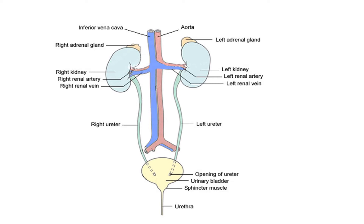Now let's see how these parts of the excretory system are arranged in our body. The kidneys are situated on the back side of our abdomen, on either side of the backbone. This is the right kidney and this is the left kidney. Remember — labeling is very important, and sometimes you get a question asking which is the left kidney.